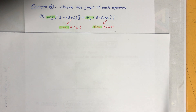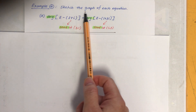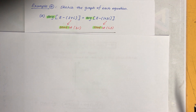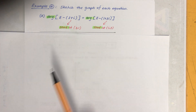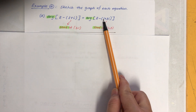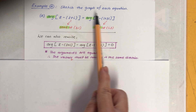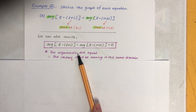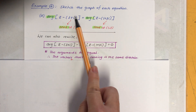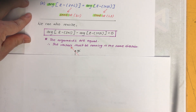Example 4 is a bit more difficult, so watch this more than once if needed. The equation looks different but don't panic. Because it's an argument equation, we'll have seeds — the starting points are (3, 1) and (1, 3). We can also rewrite the equation: if the difference of the arguments equals zero, the arguments are equal, meaning the vectors run in the same direction.